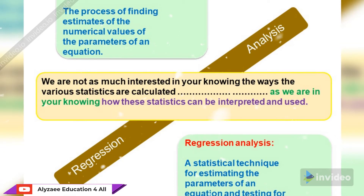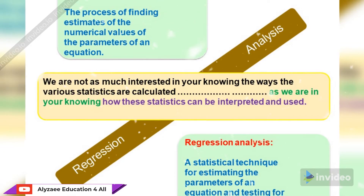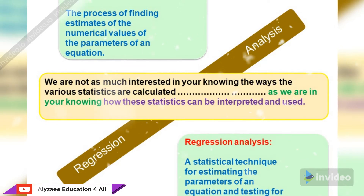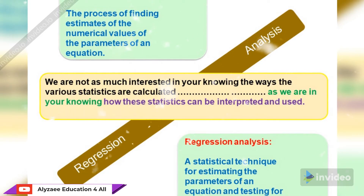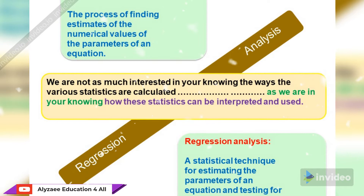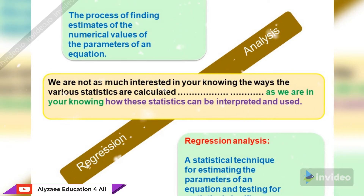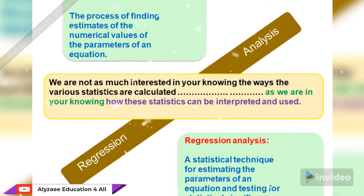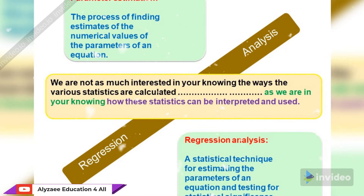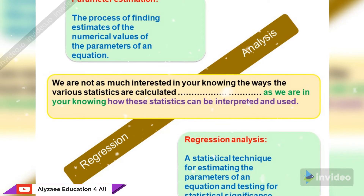So what is parameter estimate? The process of finding estimates — the process of finding the numerical values of the parameters of an equation. Regression analysis is a statistical technique for estimating the parameters of an equation and testing for statistical significance. That is the difference between the two.